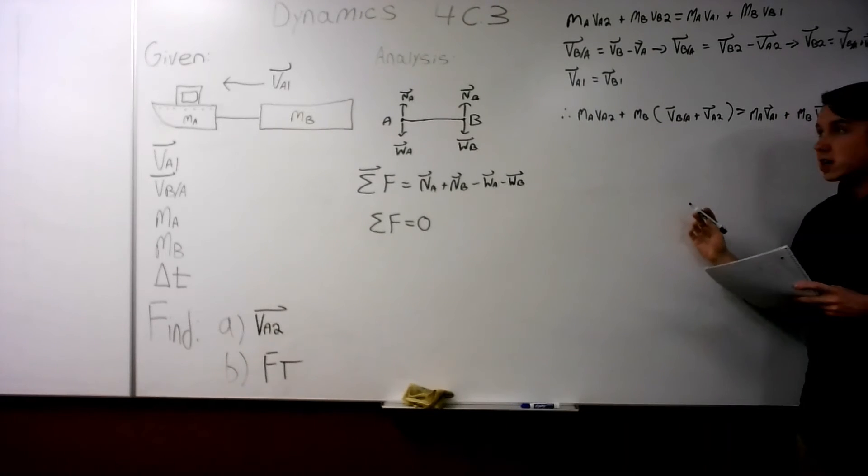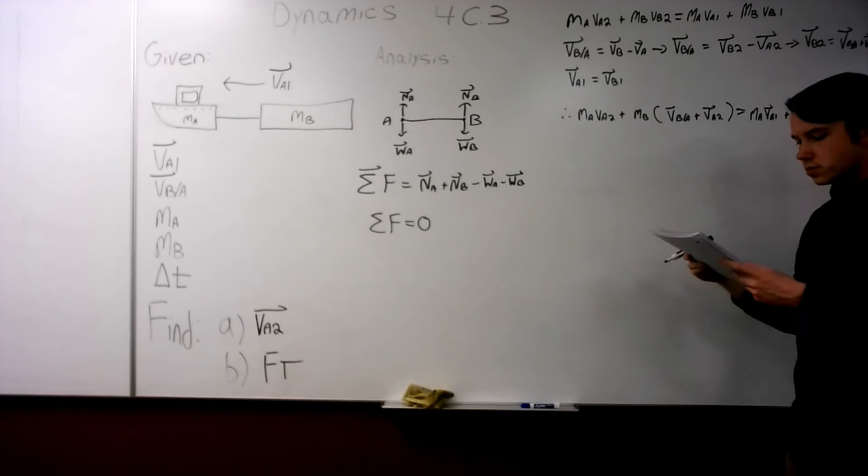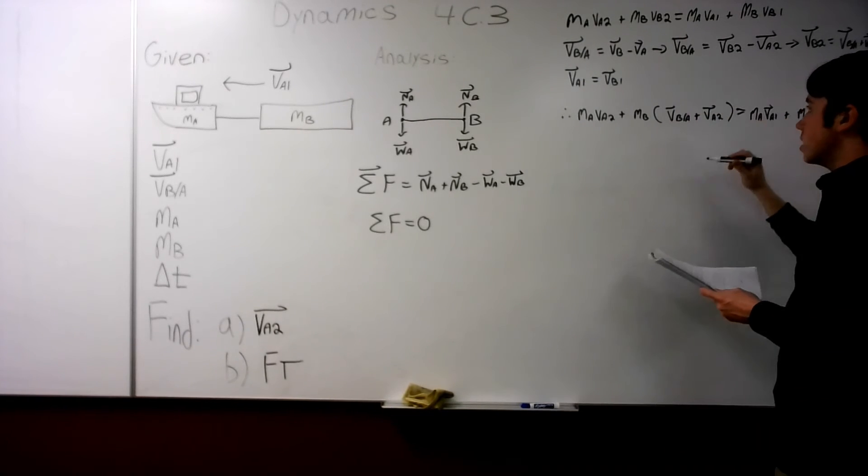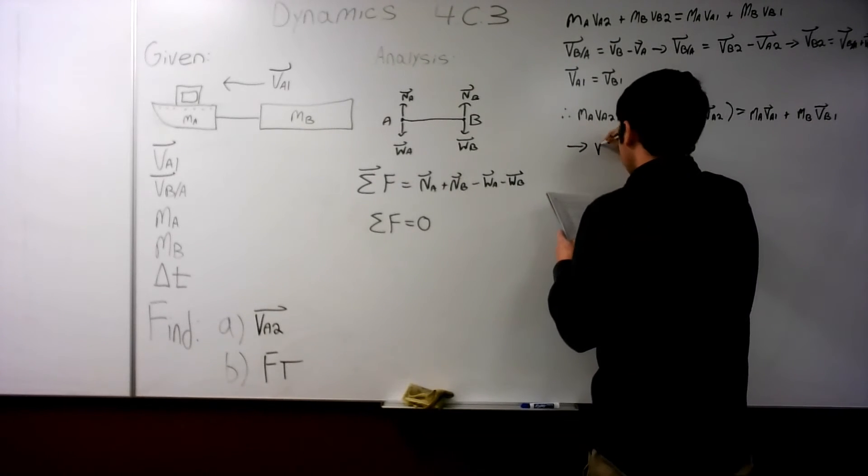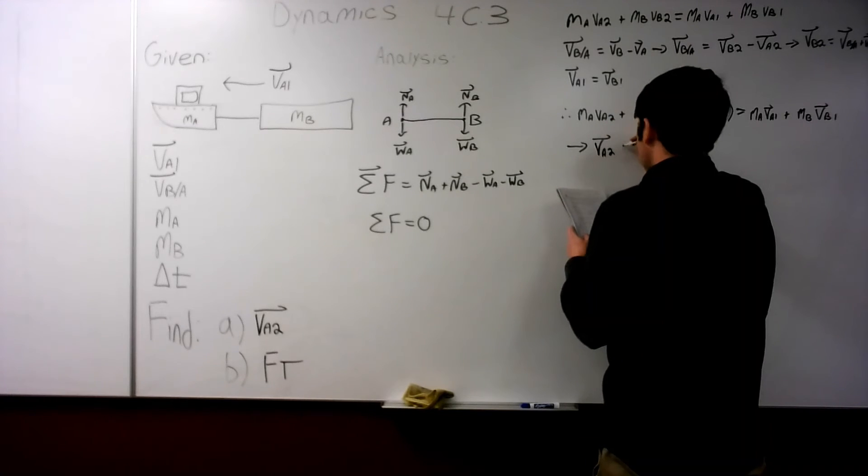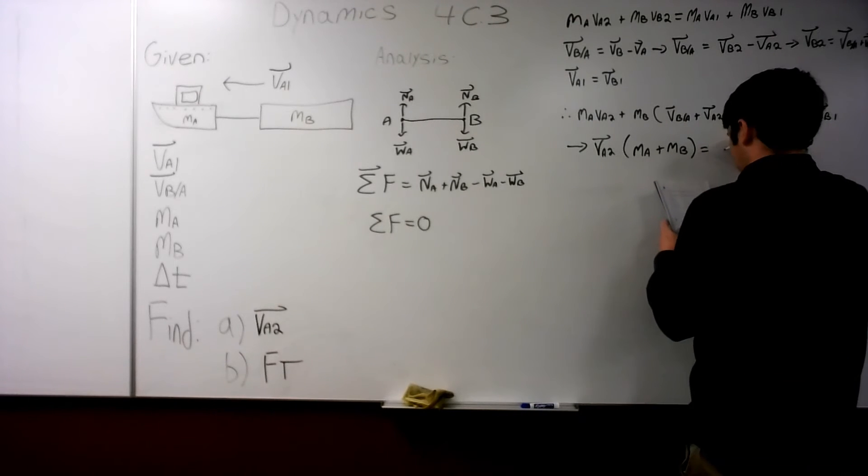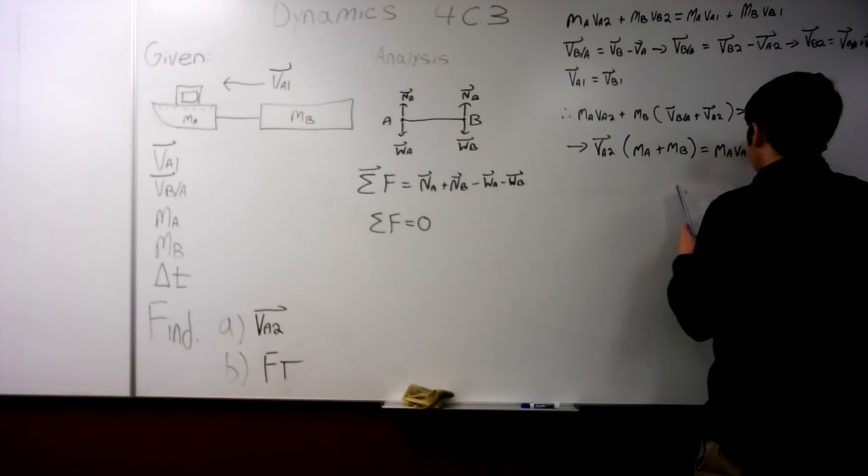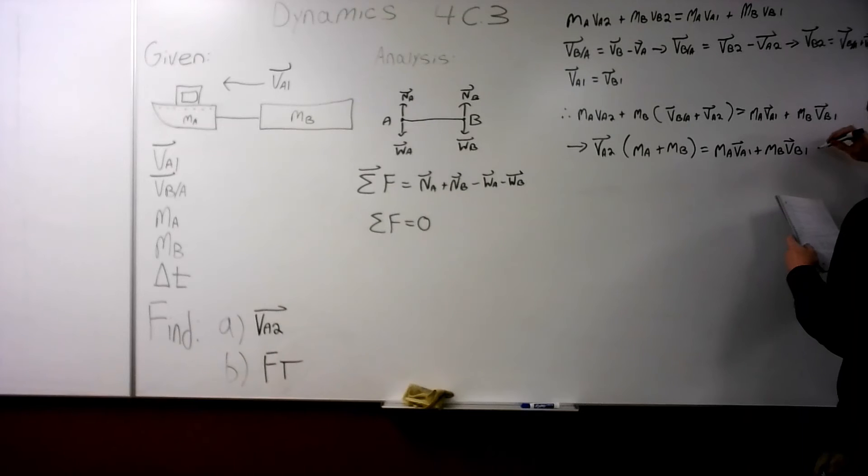Okay. With that done, I'm going to combine a few steps here of simplifying, and we're going to get VA2 all on one side and everything else on the other side. So that includes distributing and then rearranging a little bit. So that's going to leave us with VA2 times MA plus MB is equal to MA VA1 plus MB VB1 minus MB VBA.